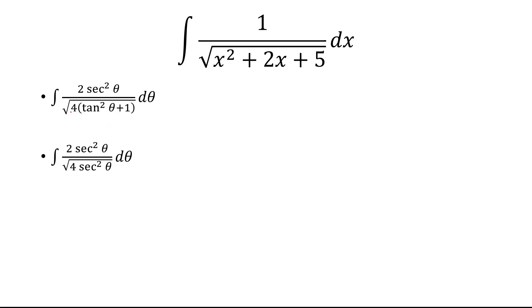And this 4 is going to come outside the square root as 2. And that's going to cancel with the 2 at the top. And the square root of secant squared is just secant. So secant squared over secant will just become secant.